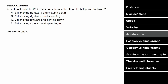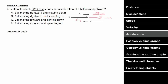What does an example problem for acceleration look like? Let's determine the two cases where the acceleration of this ball points to the right. If a ball is moving to the right and slowing down, there's a net force to the left — so acceleration points left. If moving right and speeding up, the net force and acceleration both point right. If moving leftward and slowing down, the net force and acceleration point right. If moving leftward and speeding up, the net force and acceleration point left. So cases B and C are where acceleration points to the right.